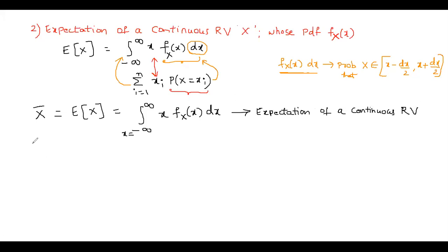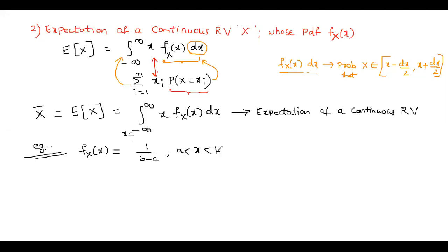Let's see an example of how to calculate expectation of a continuous random variable. Consider a continuous uniform random variable with PDF: f_X(x) equals 1 divided by (b minus a) for x between a and b, and 0 elsewhere.